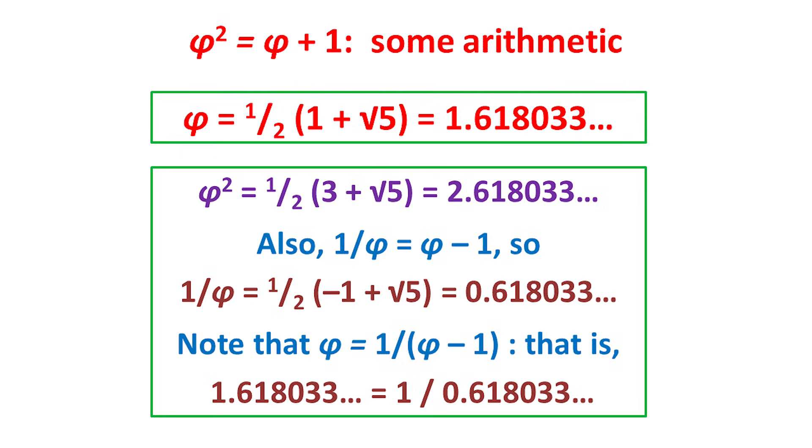Because phi squared equals phi plus 1, we obtain its square by adding 1. So phi squared is 2.618 etc. If we then divide the quadratic equation by phi and rearrange it, we get 1 over phi equals phi minus 1. And so we obtain its reciprocal 1 over phi by subtracting 1. So 1 over phi is 0.618 etc.